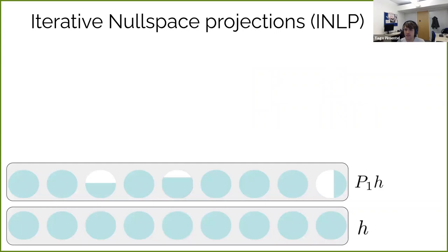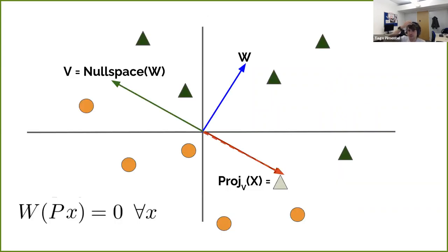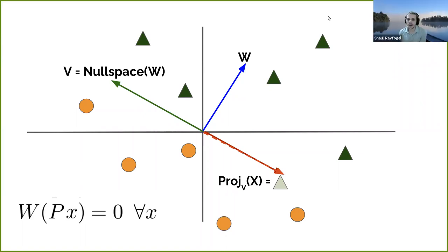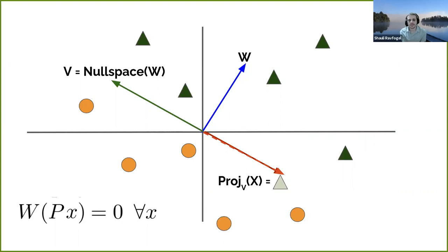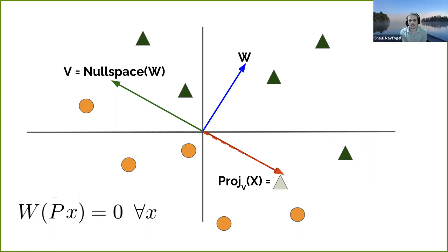There's a question in the chat: Connor is asking if W represents the weights in the linear classifier for gender. Exactly — W defines the separating plane, and it is actually the weight vector of the classifier. Another question: when training W, it looks like you're only training a linear transformation rather than an affine one — you don't have a bias vector. Do you have an opinion on how the bias vector might influence how you create these projections?